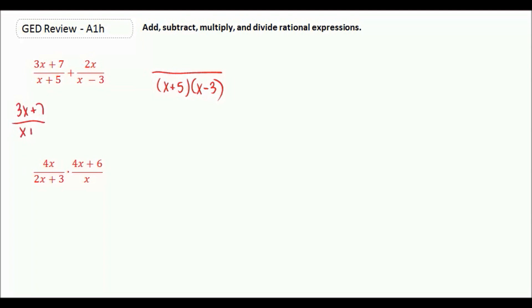So that means for our first term, if we had x plus 5, we need to multiply it by x minus 3, which means we multiply our numerator by x minus 3 also. So we FOIL, we get 3x squared minus 9x plus 7x minus 21.